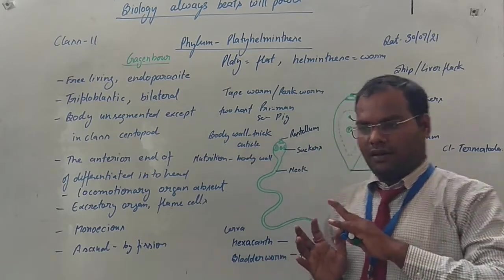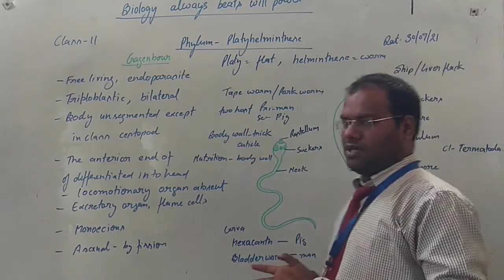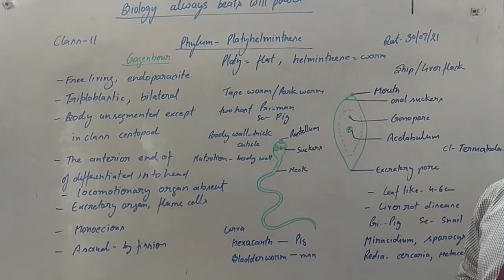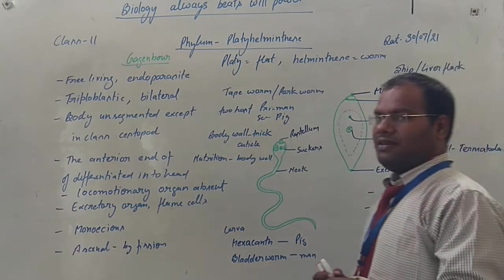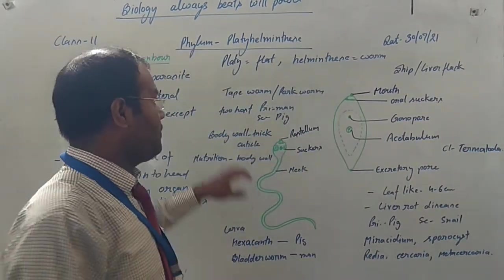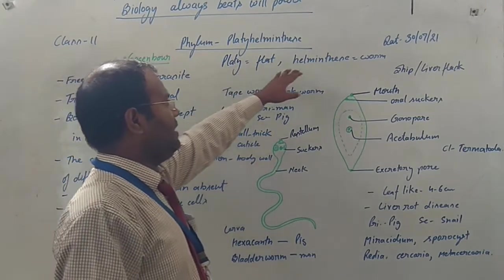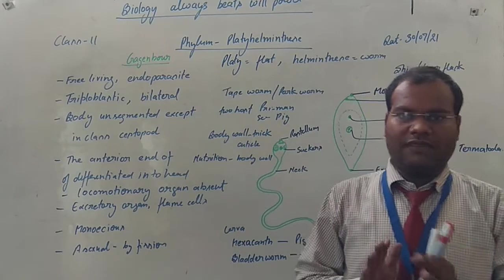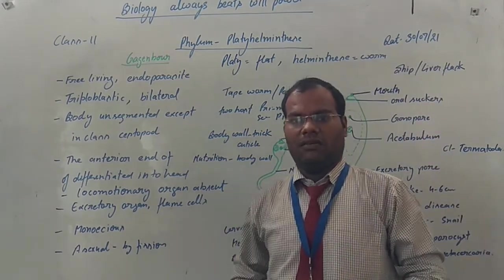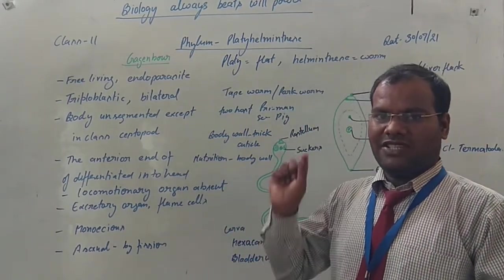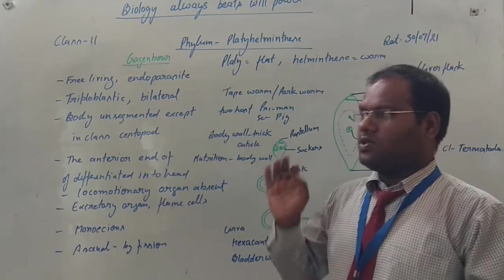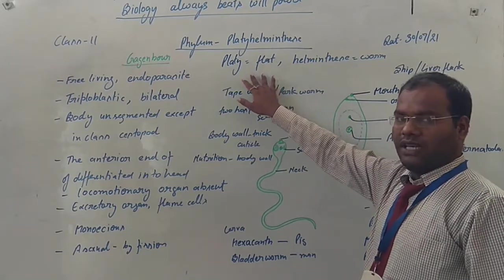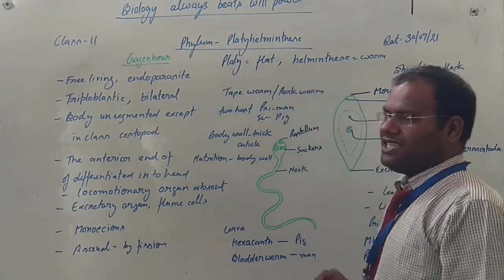In the previous video, we discussed about the Ctenophora, and today we explain to you about the Platyhelminthes. The word Platyhelminthes is made up of two words: platy and helminthes. Platy means flat — organisms whose bodies are flat, means paper-like body. Helminthes means worms.